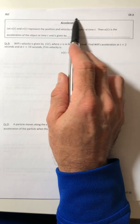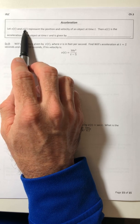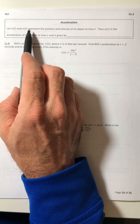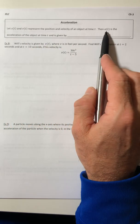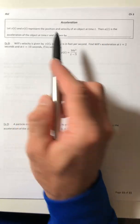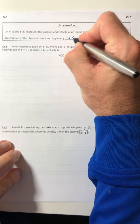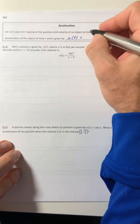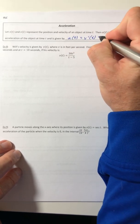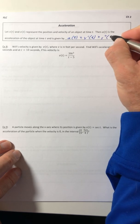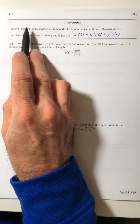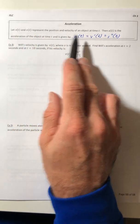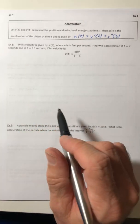So we're going to be looking at the acceleration of an object. We know how position and velocity functions are related, which for review, velocity is the derivative of position. So if you have the position function, you can get the velocity function and then you can also get acceleration by doing the subsequent derivatives.